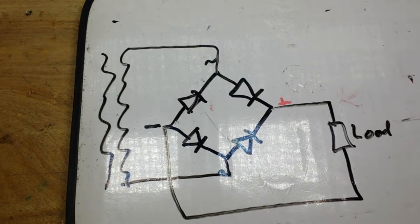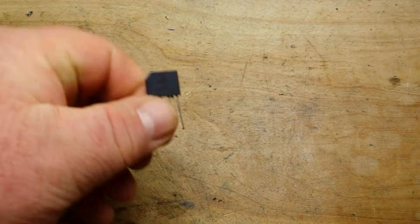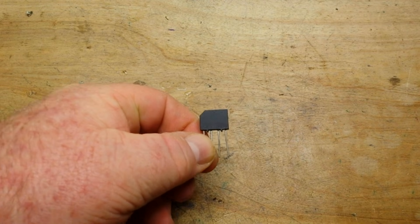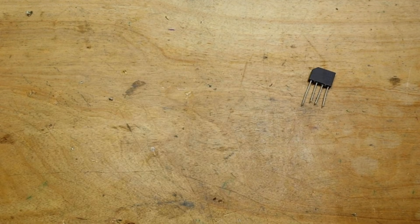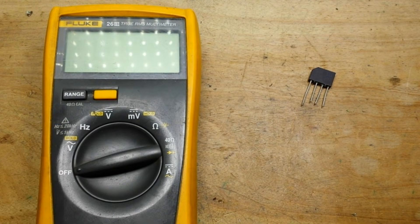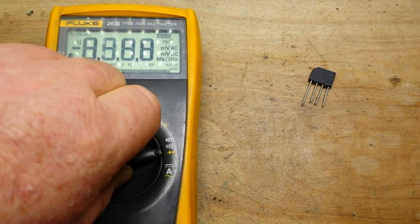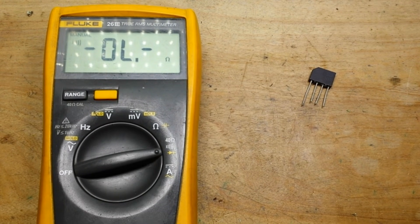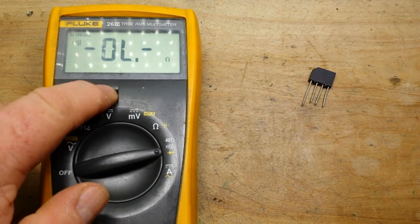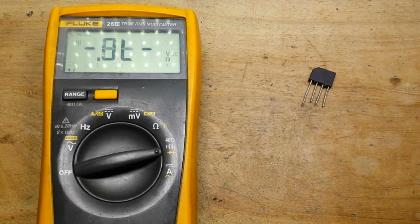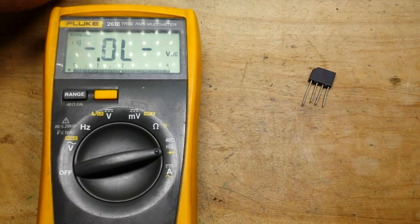So to test a bridge rectifier to find out if it's working, all you really need is a multimeter. We'll bring out the Fluke here, simple, put it in diode mode.